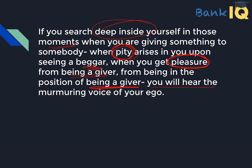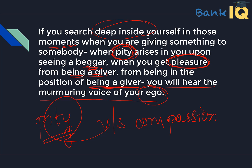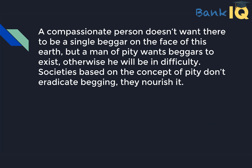You will hear the murmuring voice of your ego. The entire passage is about pity versus compassion — how if you feel sorry for someone, that is something boosting your ego, encouraging your sense of self, whereas compassion removes the ego. A compassionate person doesn't want there to be a single beggar on the face of this earth. When you are compassionate, you don't want poverty to exist, because you can feel their pain. But a man of pity wants beggars to exist, otherwise he will be in difficulty.